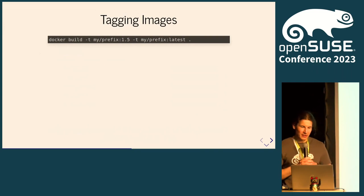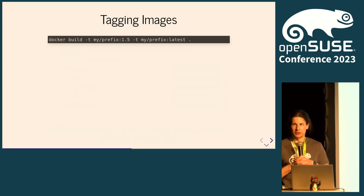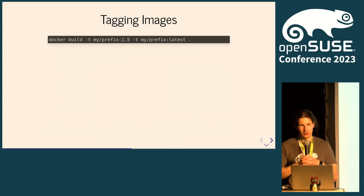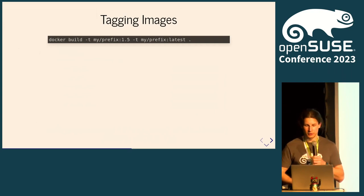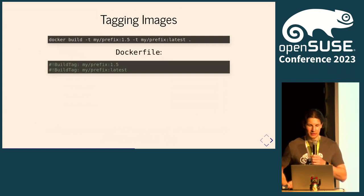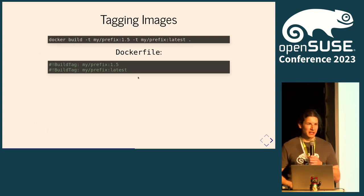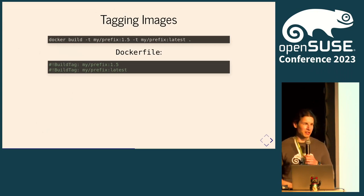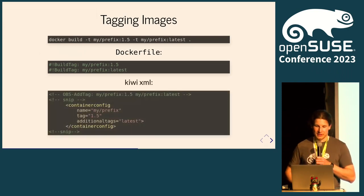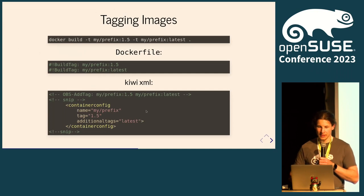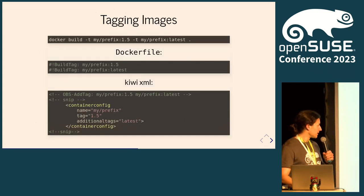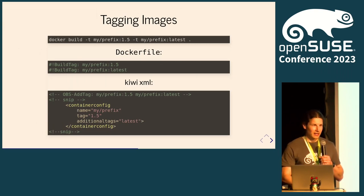If you want to tag images with Docker you just add a command-line flag, but in OBS you can't tell it how to invoke Docker directly — for good reasons, since you could do evil things. Therefore there are magic comments you add in a Dockerfile to define tags. You can add as many as you like. The same can be done in Kiwi via magic comments in XML, or in the container config.